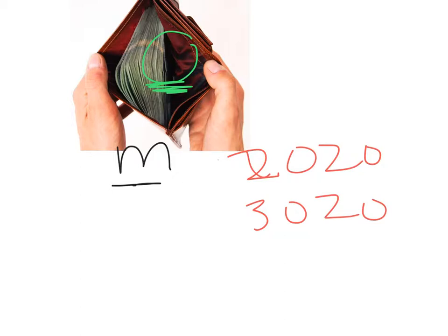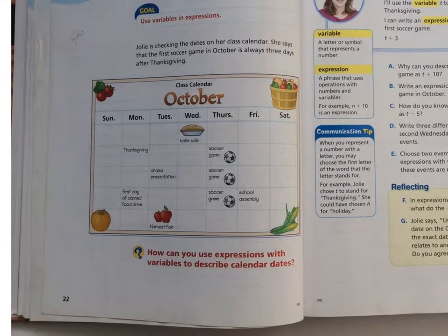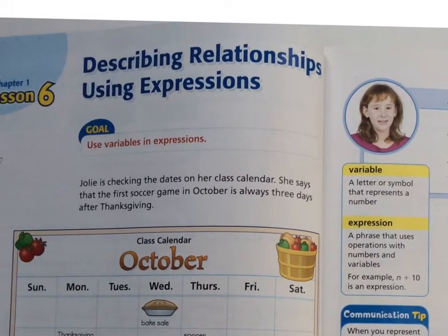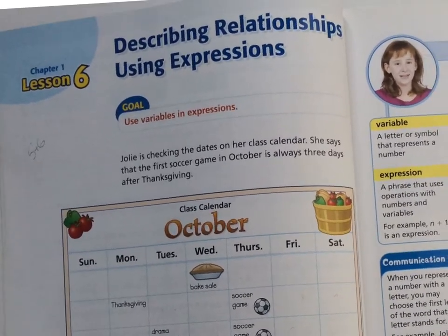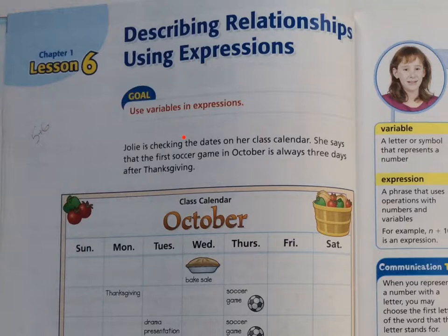That was a small introduction to expressions. Turn with me to page number 22. Page number 22 — we're describing relationships using expressions. Our goal for today is to use variables in expressions. Using the wallet example, we were able to use a variable of M and the expression of M plus 20 to show the amount of money Mr. Nicanor had in his wallet plus the $20 bill. Don't try and check my pockets because there's no money there.